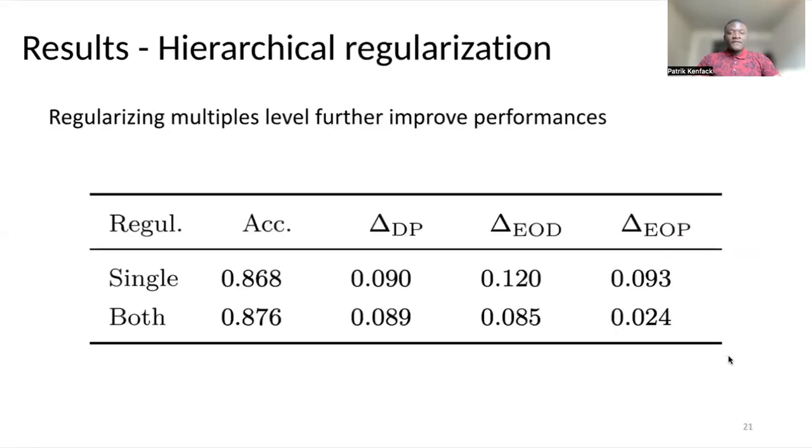We also evaluate the hierarchical regularization. If we have a two-layer perceptron, by regularizing only one layer, we achieve this accuracy and fairness. We see that by regularizing further at multiple levels, this can further improve the performances of the model.